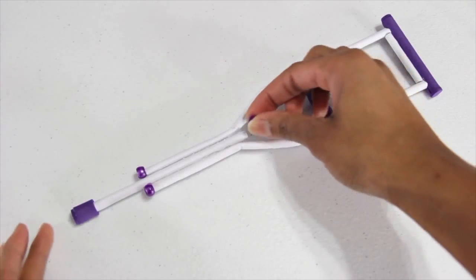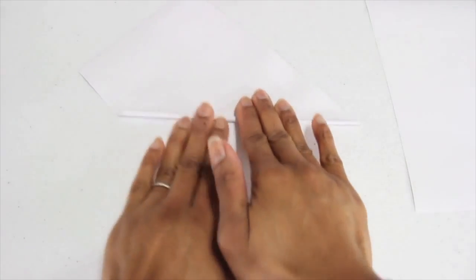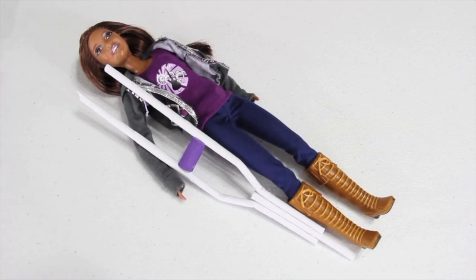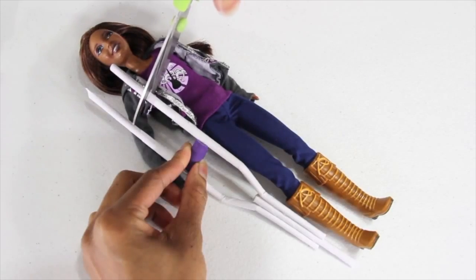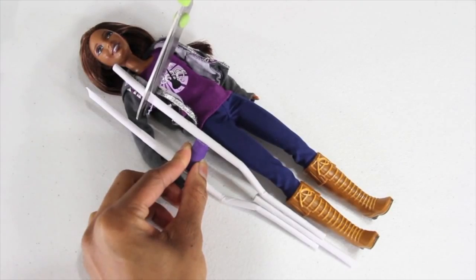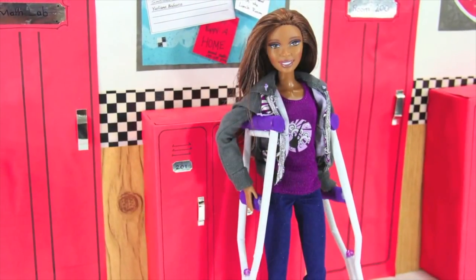For a smaller doll, like a 10 to 12 inch, I cut the paper in half, and then roll just as before. The crutches can be custom fit for almost any size doll. I like to stop this middle pole here at right about the knee, and the hand rest at the hip, and I cut off the top so that it hits right underneath the arm. And you're done. Happy crafting!